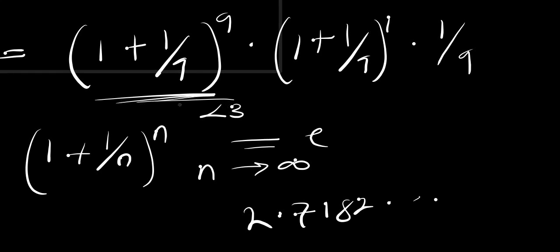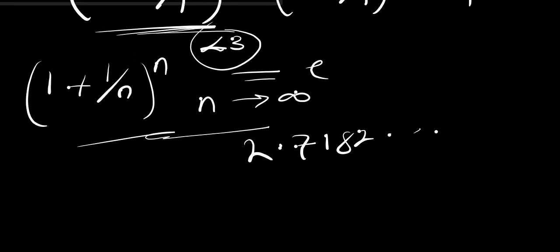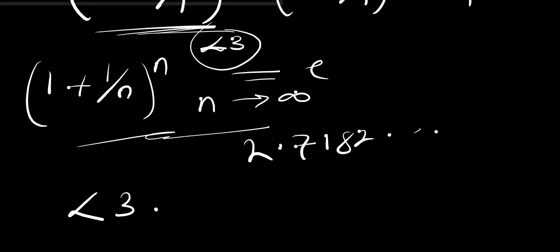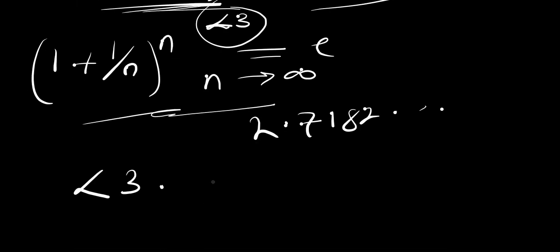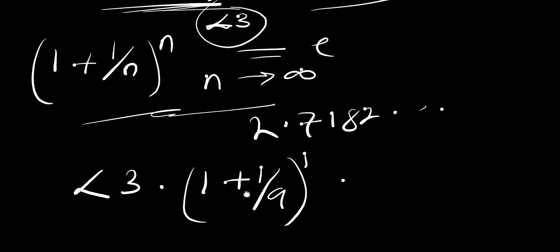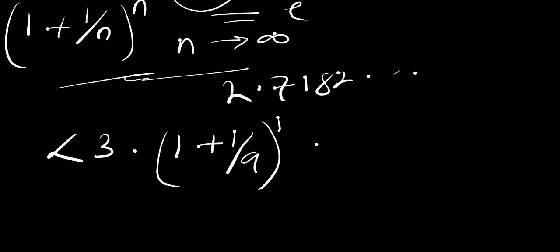So the value of (1 + 1/9)^9 using this identity is less than 3. That means we have a number less than 3, multiplied by (1 + 1/9)^1, which is just (1 + 1/9), then times 1/9.